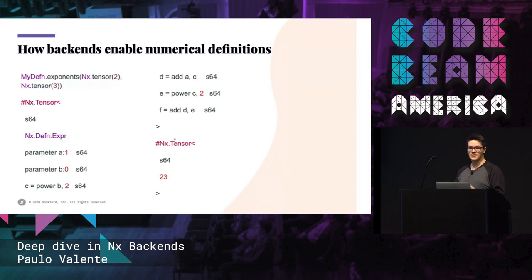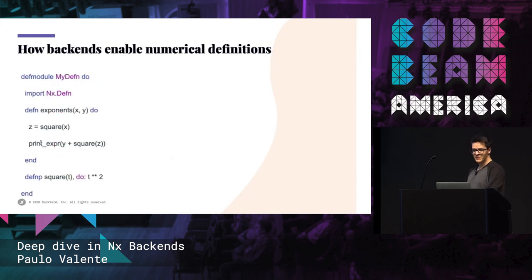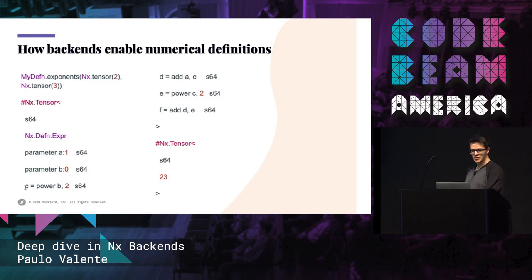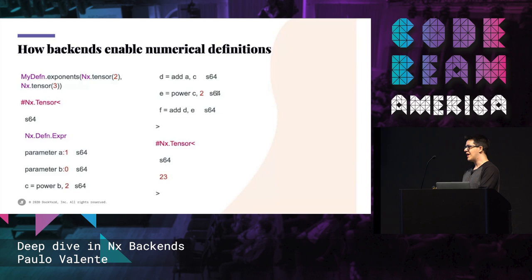This is what happens when we pass tensors into our exponents function. We get an expression, which is being inspected through the print_expr call at the end, so we can see what the expression is actually like. We get the value 23 as output. But most importantly, we can see the symbolical representation of the code being executed. We can also see that the C node appears both in the D expression and the E expression — that's the difference from the expression backend to a simple AST. It's the same exact node, not just the same value, much like when you reference a variable in Elixir.